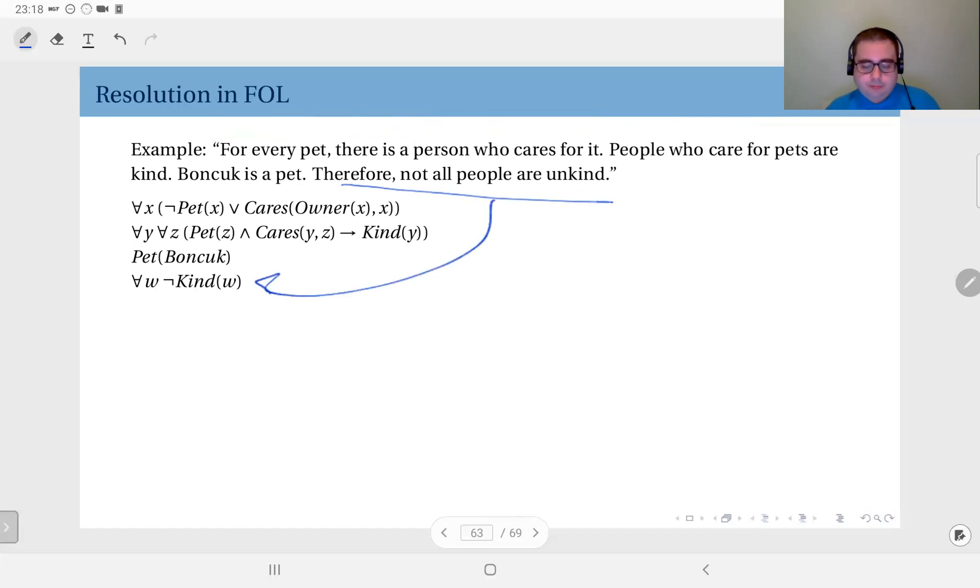The first one I can express as: for all x, ¬Pet(x) ∨ Cares(Owner(x), x). This here, as you remember, is the earlier example which we already derived the Skolemized version. The second premise, people who care for pets are kind, how can I express this? For all y, for all z, Pet(z) ∧ Cares(y, z) → Kind(y). So here z is a pet and y cares for z. If these two are satisfied, this implies y is kind. This is my second premise. The third one: Bonjuk is a pet, simply Pet(Bonjuk). This is the negation of my conclusion: